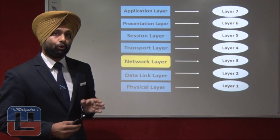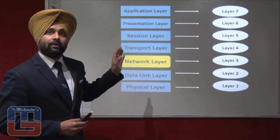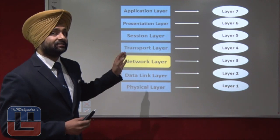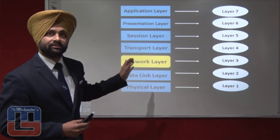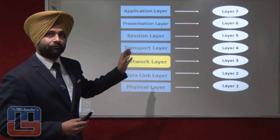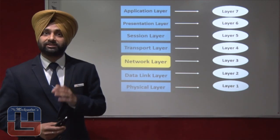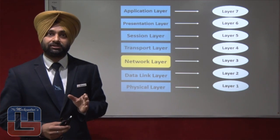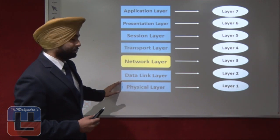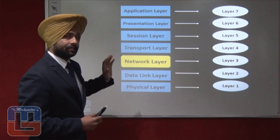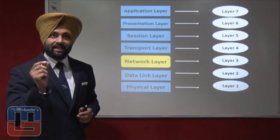We have a seven-layer architecture of OSI — a very important architecture, and very important to memorize. Questions are asked from this architecture, such as naming the fifth, sixth, or seventh layer of OSI. The first layer is the physical layer, the second is the data link layer, the third is the network layer, and so on.